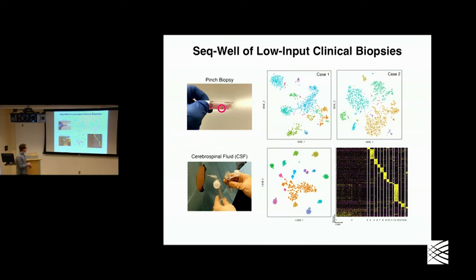The same thing we were able to do with cerebrospinal fluids. From patients with metastatic cancers, we've been able to take their CSF and apply it to the device. In many cases there are only a few hundred cells in these samples, and we're able to reconstruct the cells that were in the CSF.